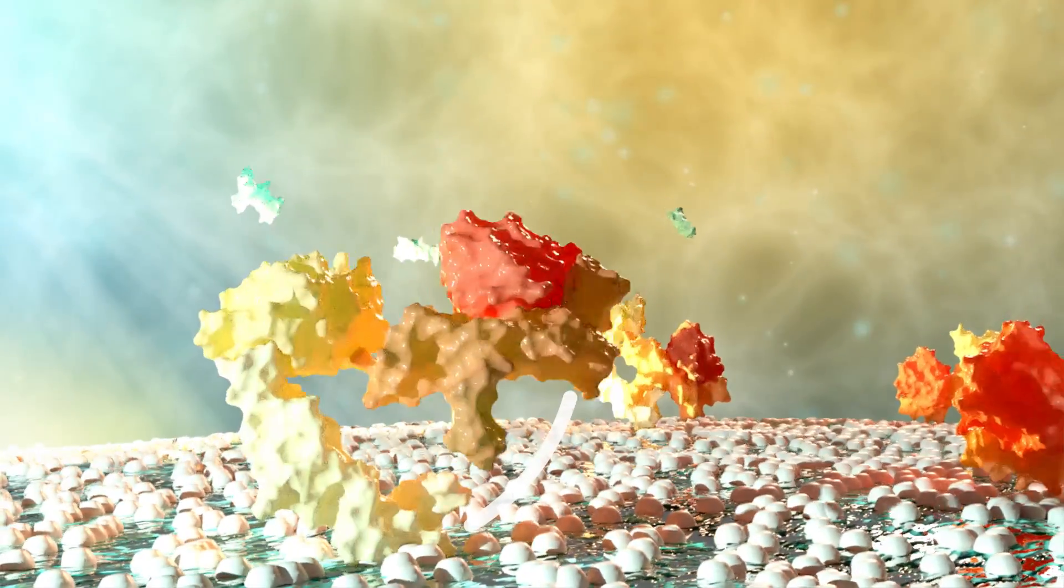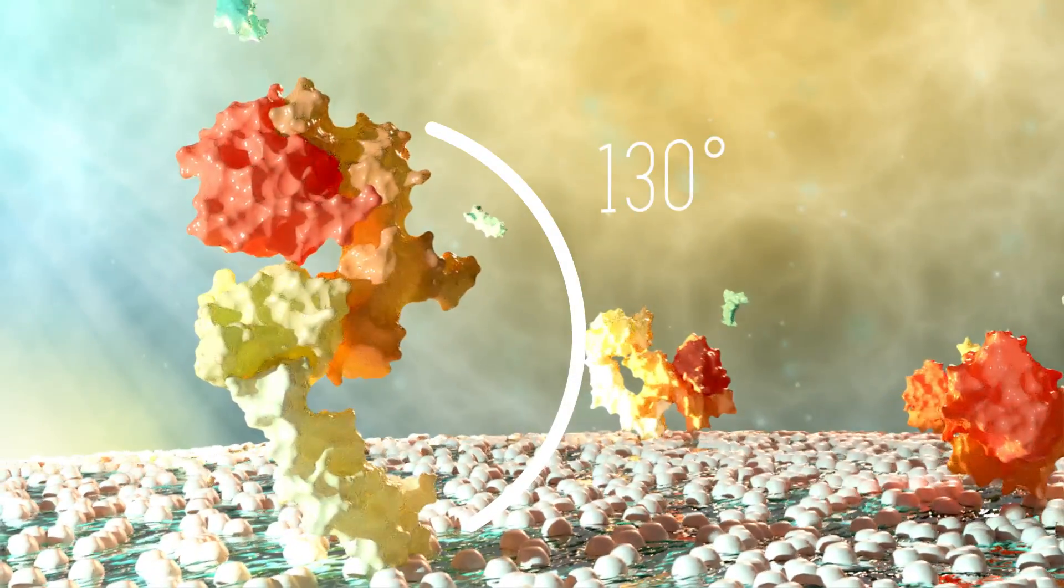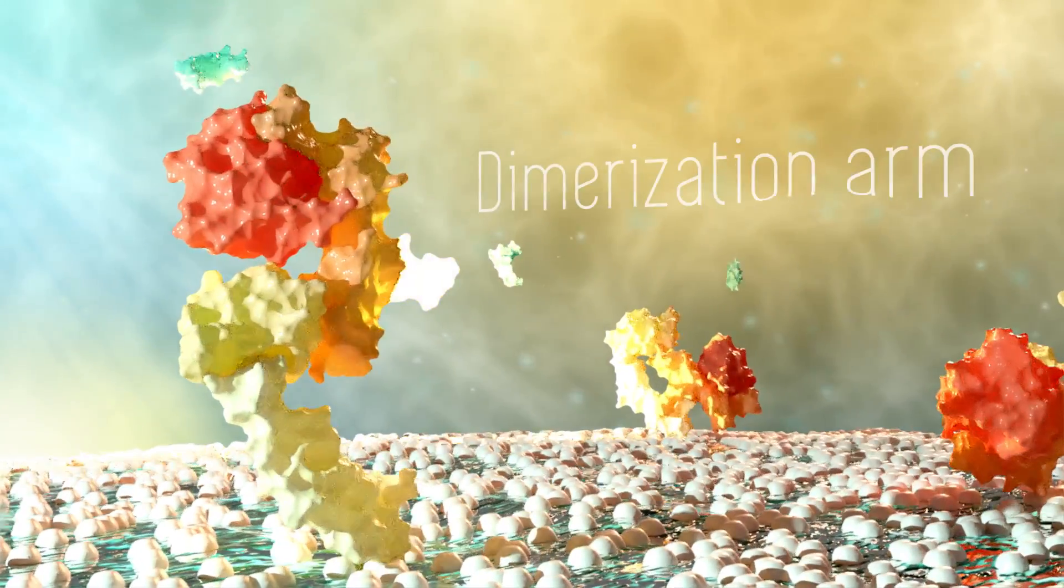In the extended state, the four domains stretch out in a 130-degree arc, exposing the dimerization arm.